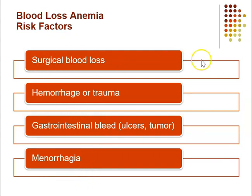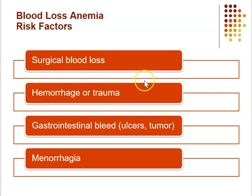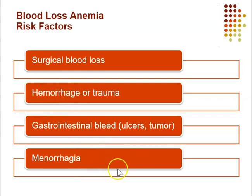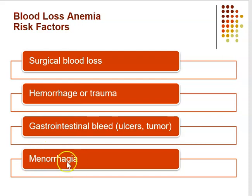Risk factors for blood loss include surgical blood loss — nurses receive an estimate of blood loss during surgery to prepare for future labs. Hemorrhage or trauma is more of a sudden type of issue. GI bleeds and tumors — some tumors are friable and bleed freely. Ulcers and esophageal varices tend to be more hemorrhagic because they're sudden and massive. Another risk factor is prolonged menses, where some women bleed for several weeks rather than the average three to five days.